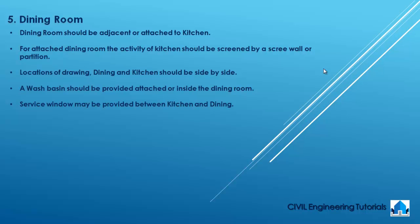The dining room should be adjacent or attached to the kitchen. For an attached dining room, the activity of the kitchen should be screened by a screen wall or partition. The location of drawing, dining and kitchen should be side by side. A washbasin should be provided attached or inside the dining room. A service window may be provided between kitchen and dining.